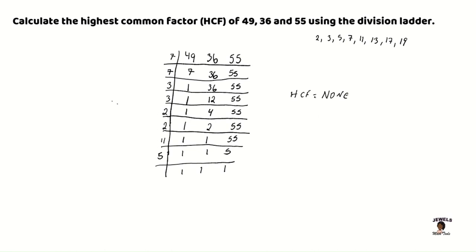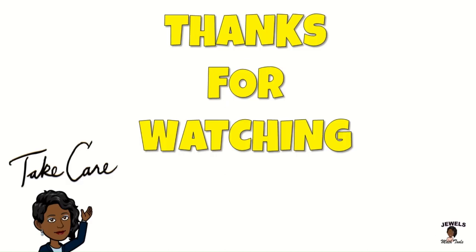So there you have it. We are finished prime factorizing our numbers using the division ladder to calculate our HCF. And since these numbers have no common factor then we know that there is no HCF for these three numbers. So make sure that you get some additional practice in. Develop your skills. See you in the next video on Jules Math Tools where we make math easy.